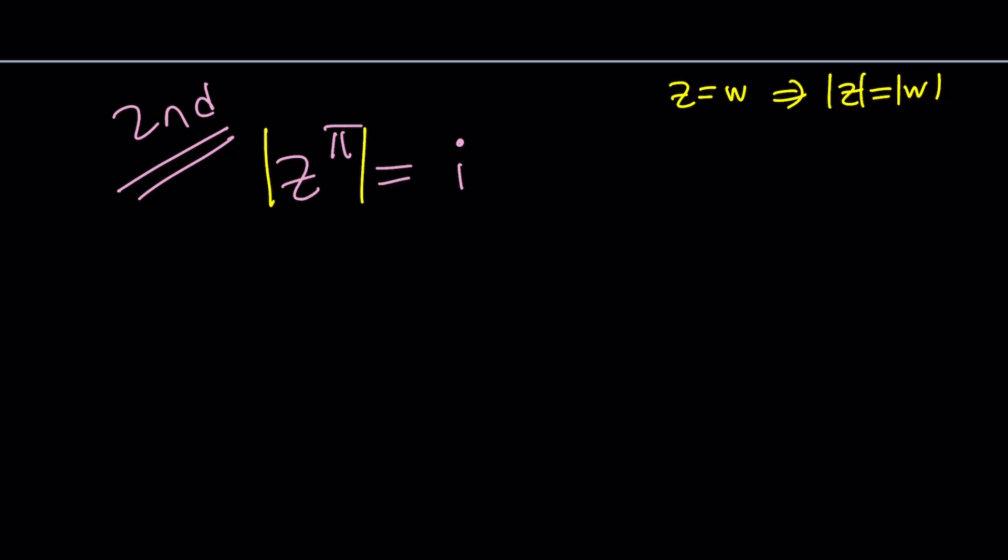So let's absolute value both sides. And notice that the absolute value of i is 1. We just talked about it. Remember, that's the modulus. And then z to the power π, we can take out the π.